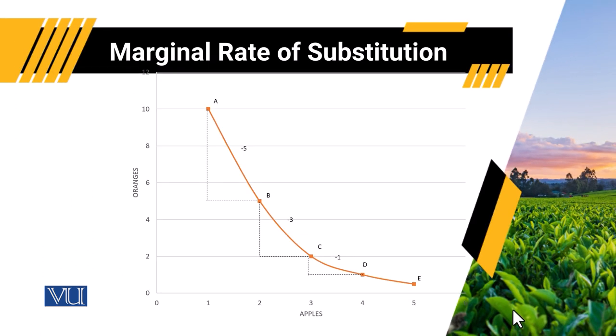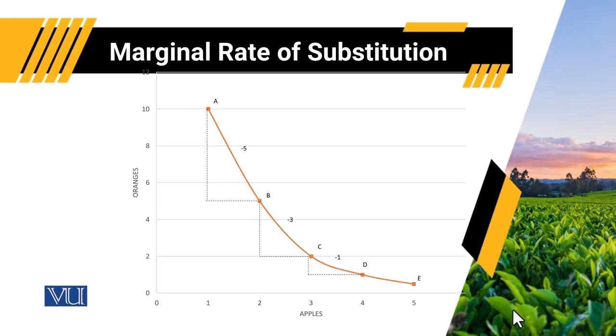To explain the slope of the indifference curve, we will use a diagram with apples on the horizontal axis and oranges on the vertical axis. If our objective is to find the slope between point A and point B, we compute the change in oranges along the vertical axis due to the change in apples. As the consumer moves from point A to point B, both the quantity of apples and the quantity of oranges change.